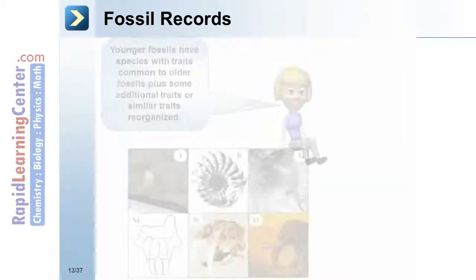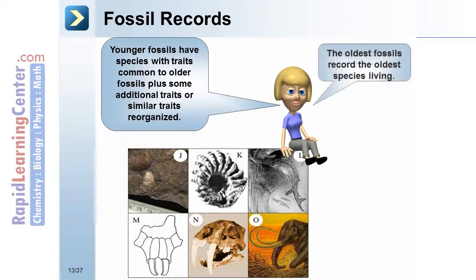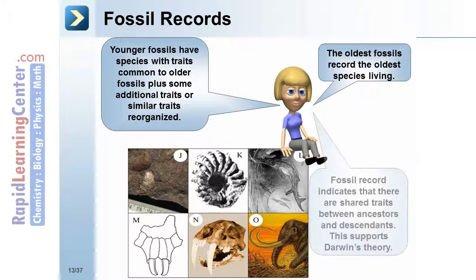Younger fossils have species with traits common to older fossils, plus some additional traits or similar traits reorganized. The oldest fossils record the oldest species living. The fossil record indicates that there are shared traits between ancestors and descendants, which supports Darwin's theory.